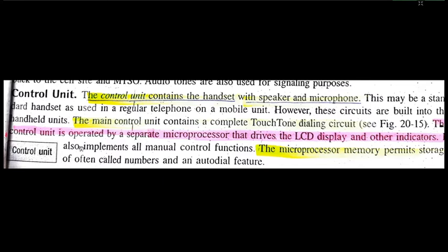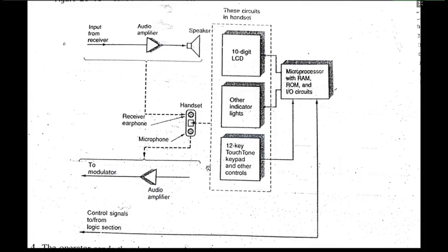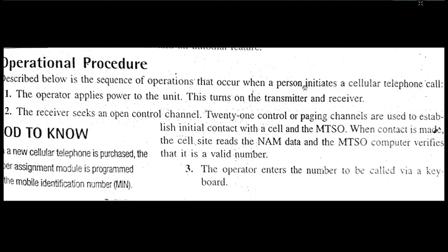Equipment buttons implement manually controlled functions. Microprocessor memory permits storing often-called numbers, and autodial features are also there. This is the block diagram of the control unit: a 10-digit LCD, a few indicators, a 12-key touchpad, and all of this is controlled by a microprocessor with RAM and ROM.